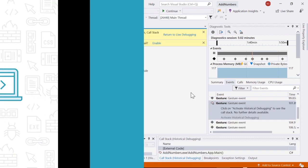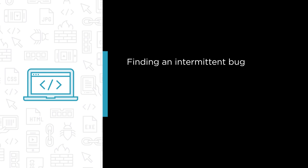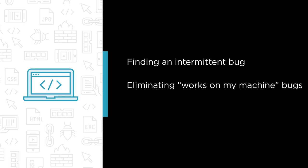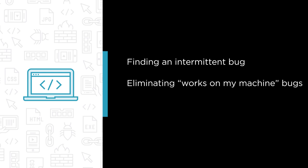Some of the major topics we'll cover include finding an intermittent bug with IntelliTrace, eliminating works on my machine bugs with IntelliTrace, and using Codemap to build a picture of your code as you debug it.